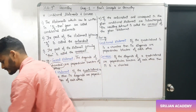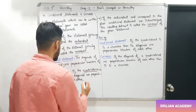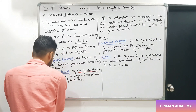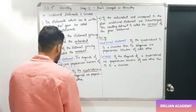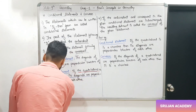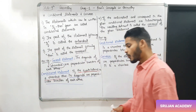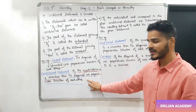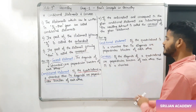देखो, यह जो मैं red में mark कर रहा हूँ, यह antecedent part है. और जो मैं blue में mark कर रहा हूँ, यह consequent part है — conditional statement में. Converse के लिए आपको क्या करना पड़ता है? यह जो consequent है, उसको आपको antecedent बनाना है.